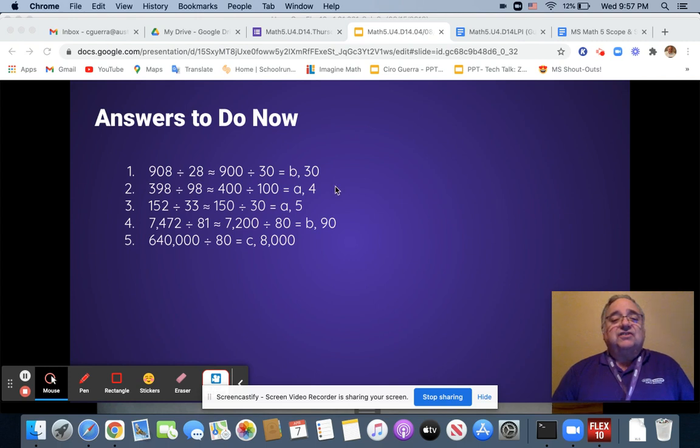Welcome back, scholars. Let's look at the answers very quickly. When we estimated the first one, we made it into 900 divided by 30, which gives us 30.